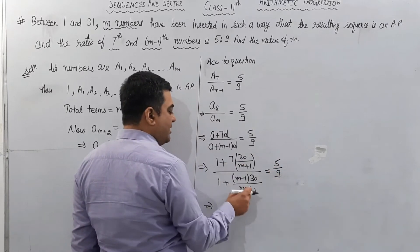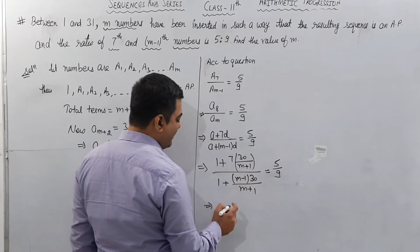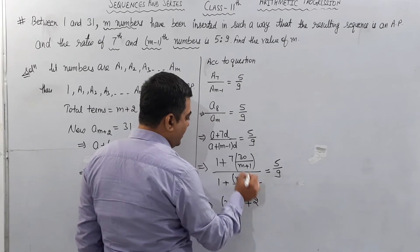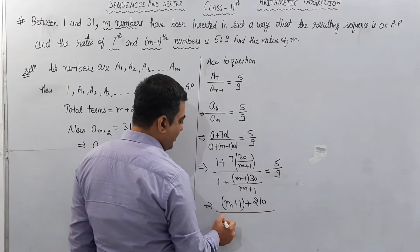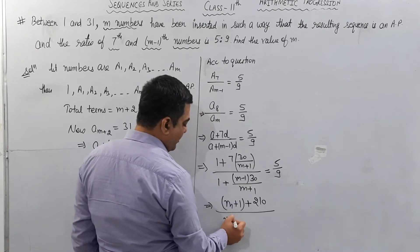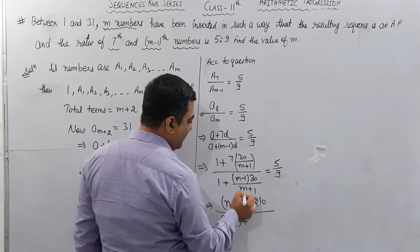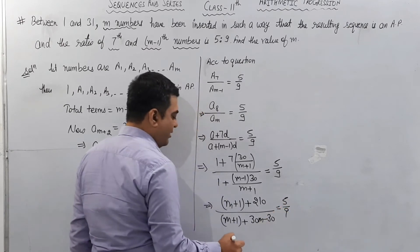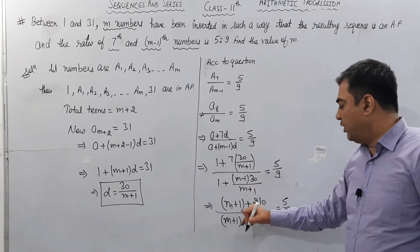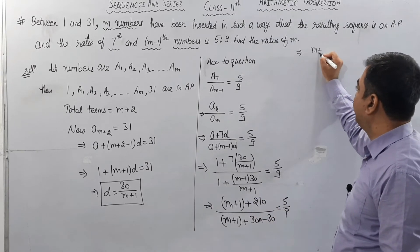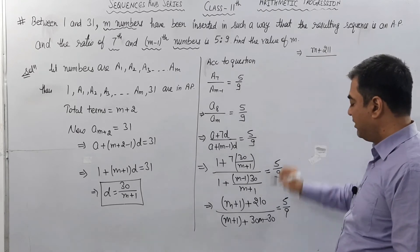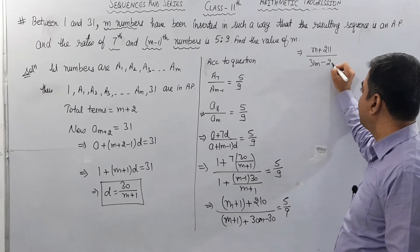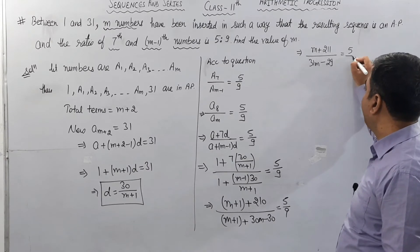Now I will take LCM in the numerator and denominator. Both LCMs are (m+1). Cancel out (m+1). We get (m+1) plus 30 times 7 equals 210. Here (m+1) plus 30m minus 30 equals 5 upon 9. Simplify: 1 plus 210 equals 211. Then (m+211) upon (31m-29) equals 5 upon 9.